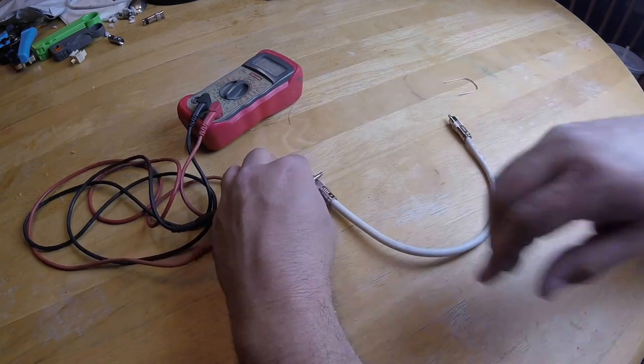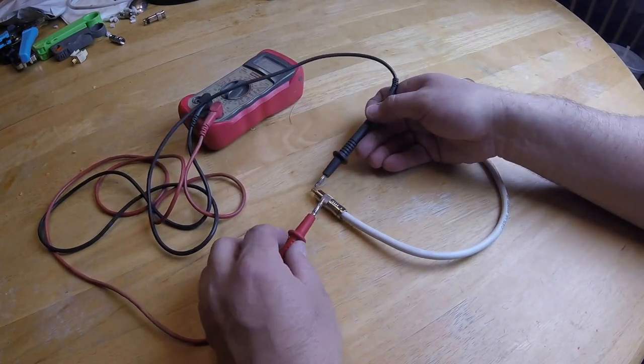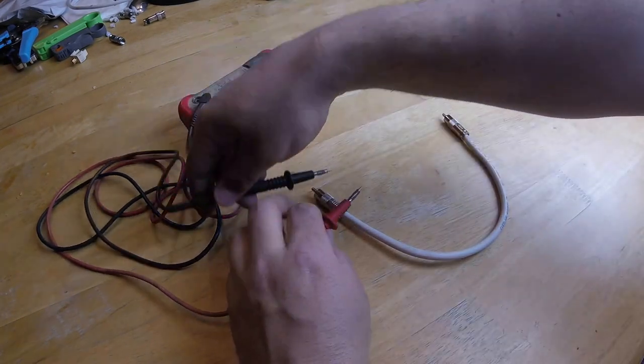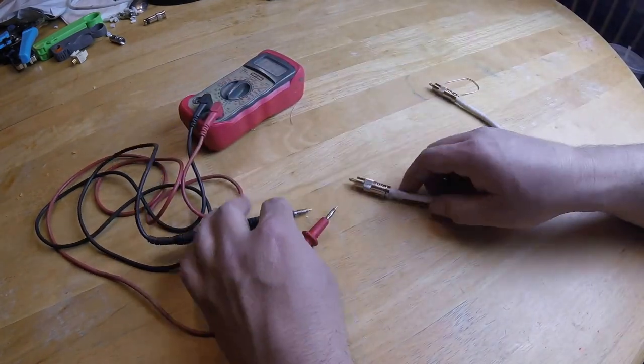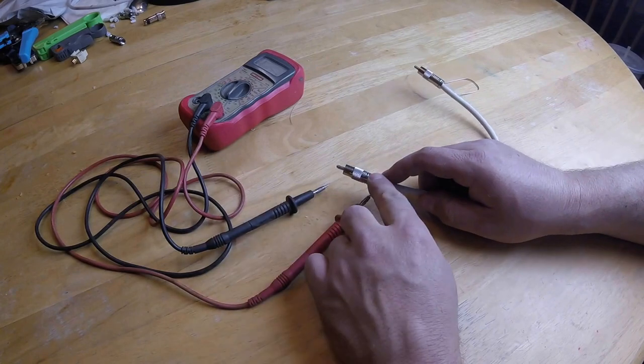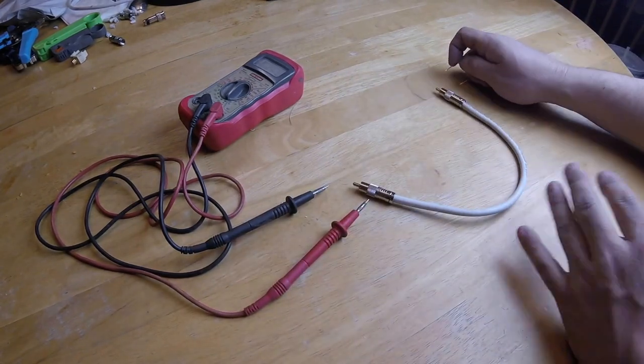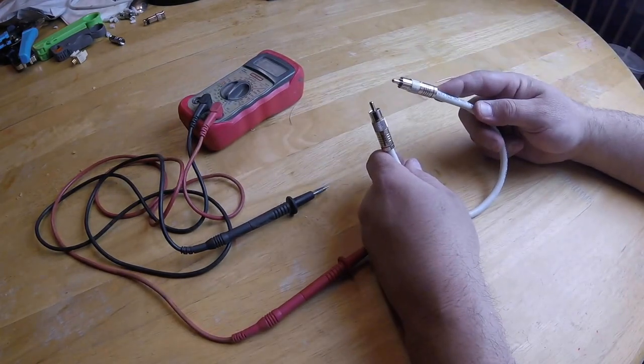Okay, so what that just told me is that when I touch this to the tip and this to the outside and it did not beep, that tells me that there's no short. And just to confirm that everything is good, when I touch the black to the tip here and the red to the outside here, and then shorted them on this side over here, that double confirmed that this wire is good. So now I know that this wire is good.